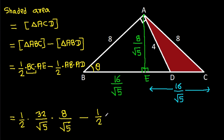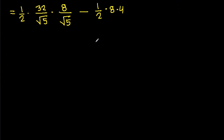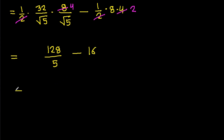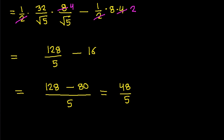So the area of ABC is 1 over 2 times 32 over root 5 times 8 over root 5, minus the area of ABD which is 1 over 2 times AB times AD, that is 1 over 2 times 8 times 4, equals 16. So we get 32 times 4 over 5, which is 128 over 5, minus 16, giving 128 minus 80 over 5, that will be 48 over 5. So the shaded area is 48 over 5.